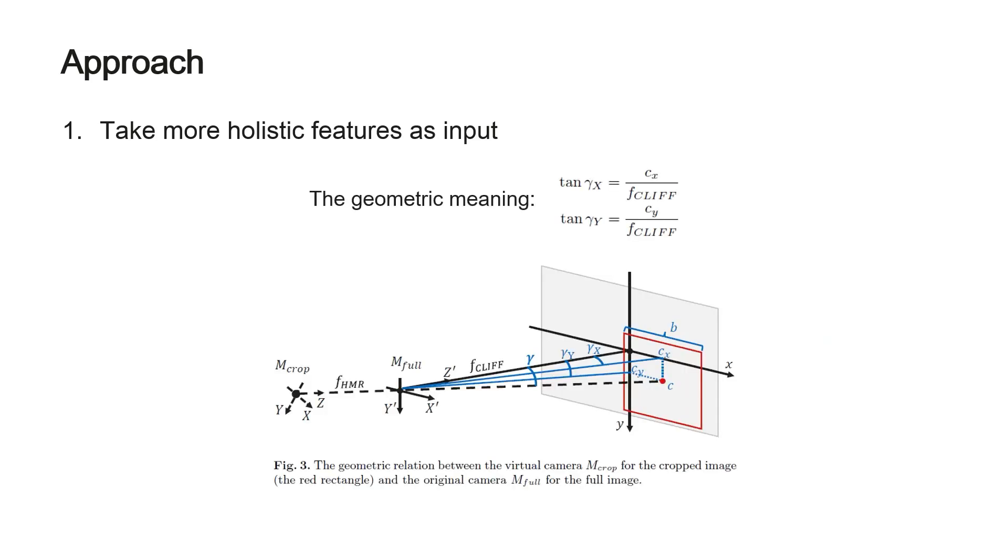We take the focal length as the denominator. Besides the effect of normalization, it also gives geometric meanings to the first two terms in the bounding box feature.